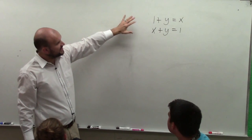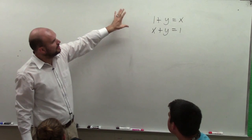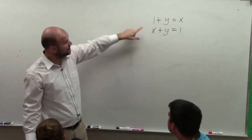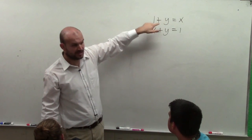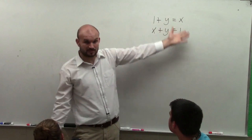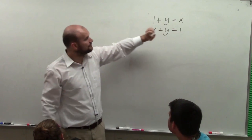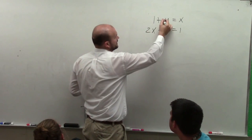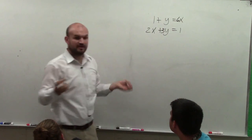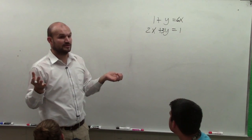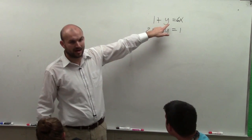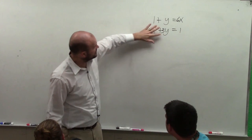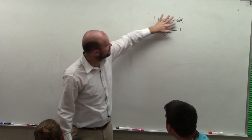When doing substitution, basically what we want to do is identify a variable that has a coefficient of one. Fortunately in this problem all of my variables have a coefficient of one. However, that's not always going to be the case — sometimes there'll be like two here, three here, and like a six. So if they had coefficients that were not one, you'd want to solve for y. In substitution you want to isolate a variable, but fortunately in this problem we already have a variable that's isolated.